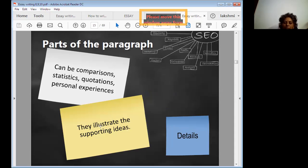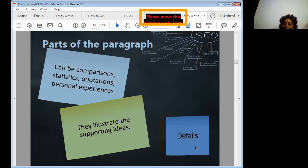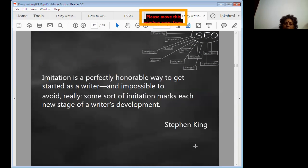What we discussed in the previous slide, the parts of the paragraph. You can use comparison, statistics, quotations, personal experience. Each sentence must illustrate the supporting ideas, and you can write the details. Take one topic sentence that must be followed by supporting sentences, at least three. Each one of you are going to contribute one sentence to make a beautiful paragraph.